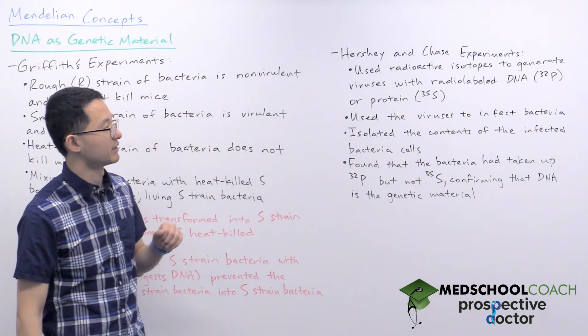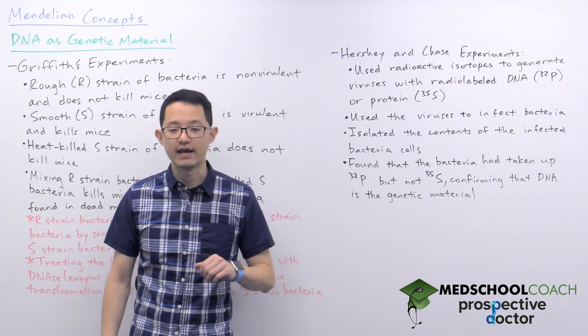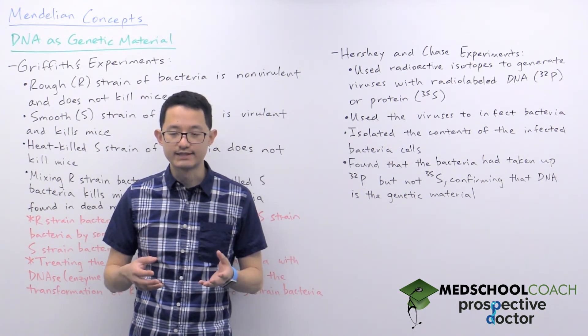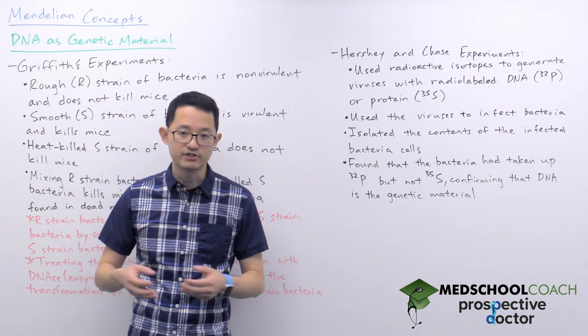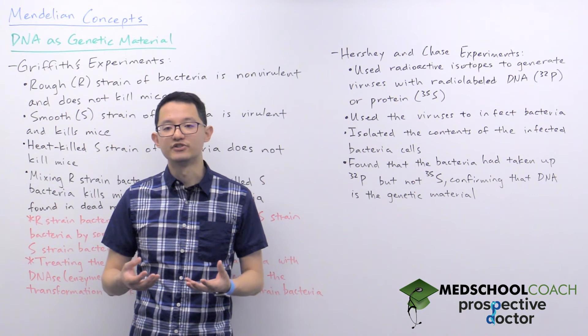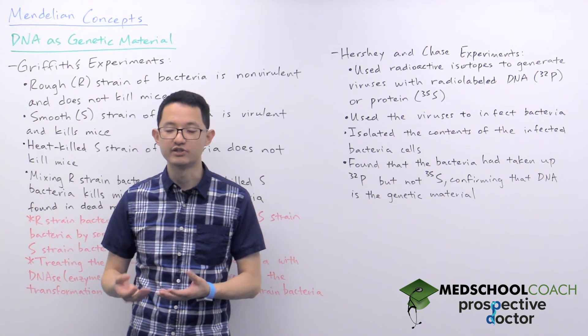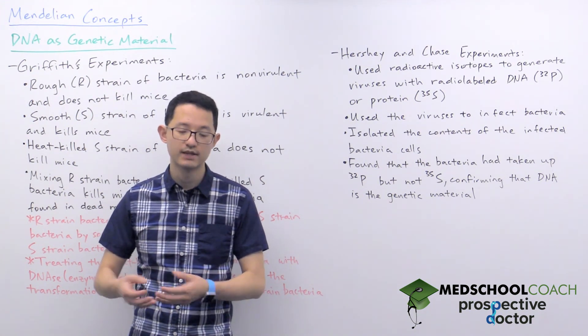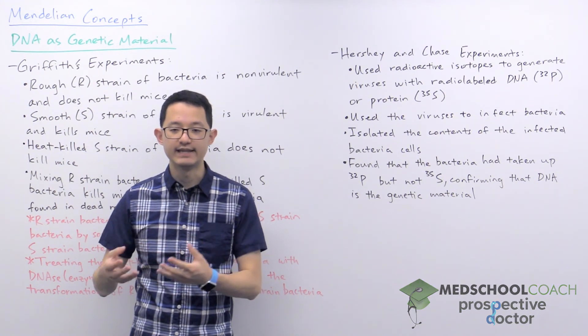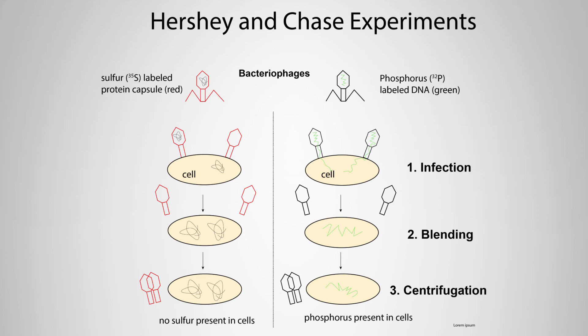Let's now take a look at the Hershey and Chase experiments. Hershey and Chase were looking at bacteriophages — these are viruses that infect bacterial cells. Viruses were known to introduce genes into bacteria and essentially hijack the bacteria's normal machinery to produce more viral particles. Hershey and Chase used radio-labeled isotopes to produce two different types of viruses. One type of virus has radio-labeled phosphorus to label the DNA molecules, and the other type has radio-labeled sulfur to label the protein molecules.